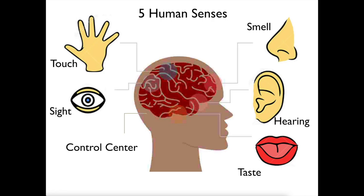As humans, we have five senses or sensors: touch, smell, sight, hearing, taste, and they're all controlled by our brain.